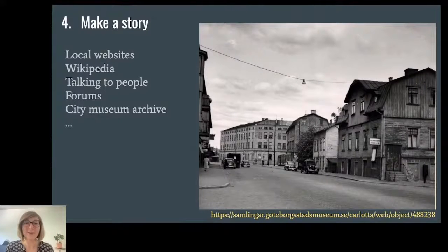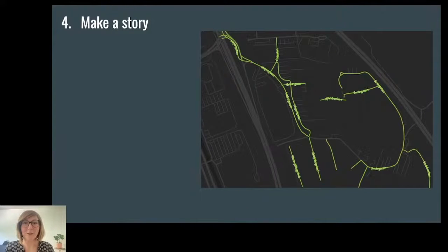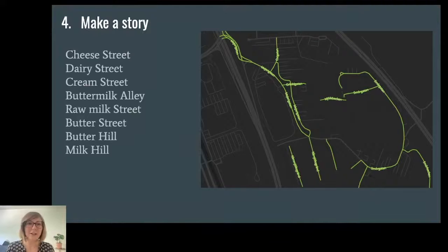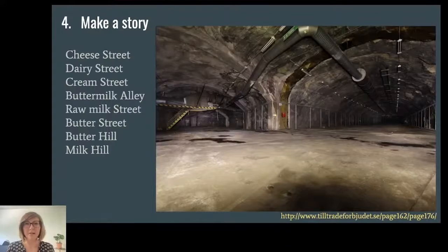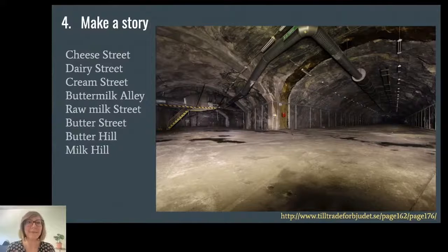One interesting story I came across was related to the dairy cluster. In the southeast of Gothenburg there is an area with street names like Cheese Street and Butter Hill, because in the 1960s there was a big dairy factory located there. There's still a huge abandoned underground bunker that belonged to the dairy factory, which was intended — according to some internet sources — to be used as a national butter storage during times of crisis.